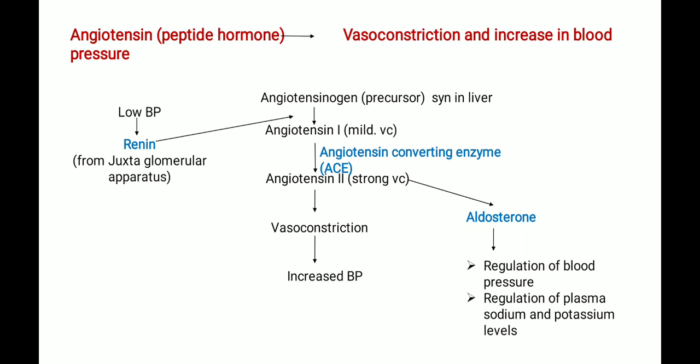Angiotensin 2 is a strong vasoconstrictor. ACE inhibitors block the angiotensin converting enzyme, preventing the formation of angiotensin 2, so blood pressure is reduced and maintained.